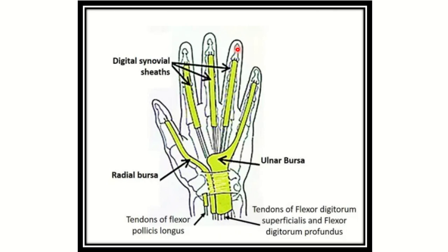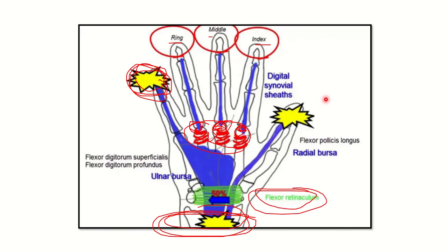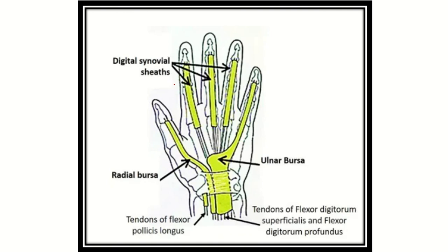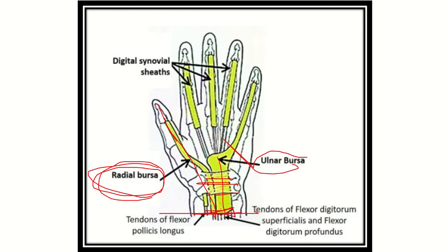We can see another picture showing the thumb, index, middle, ring, and little finger. In the case of the thumb, the radial bursa travels proximally up to proximal to the flexural retinaculum. From the little finger, the ulnar bursa also travels proximal to the flexural retinaculum. But from the index, middle, and ring fingers, the infection is stuck distally. In the case of thumb and little finger the infection reaches more proximally, so we avoid pricking the thumb and little finger.